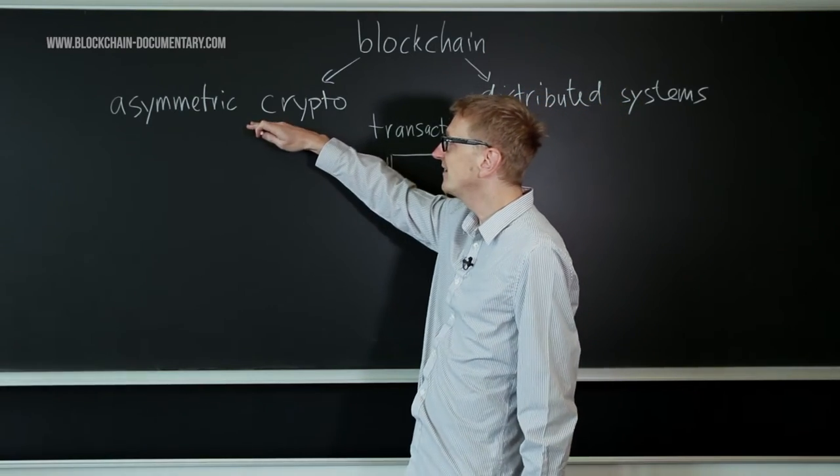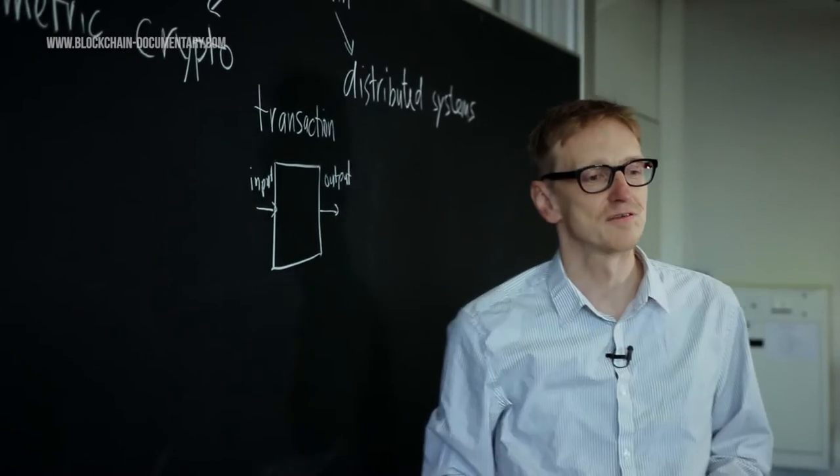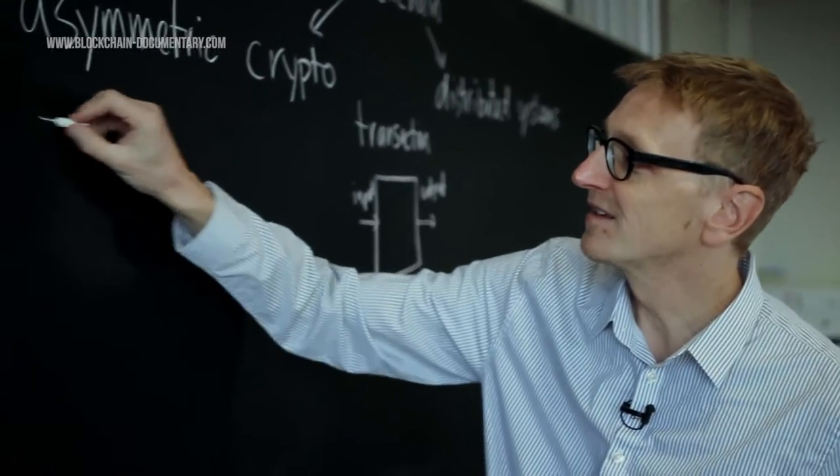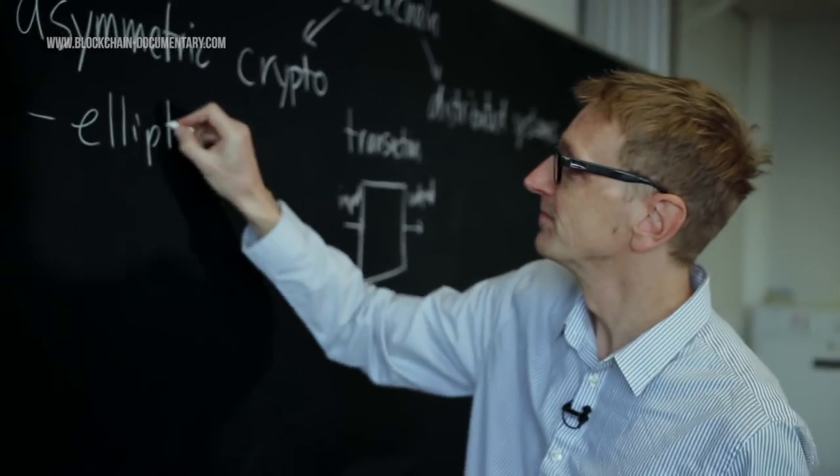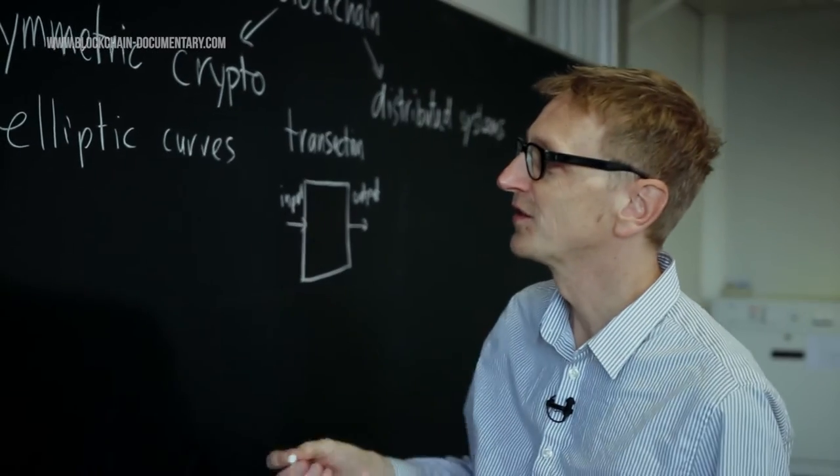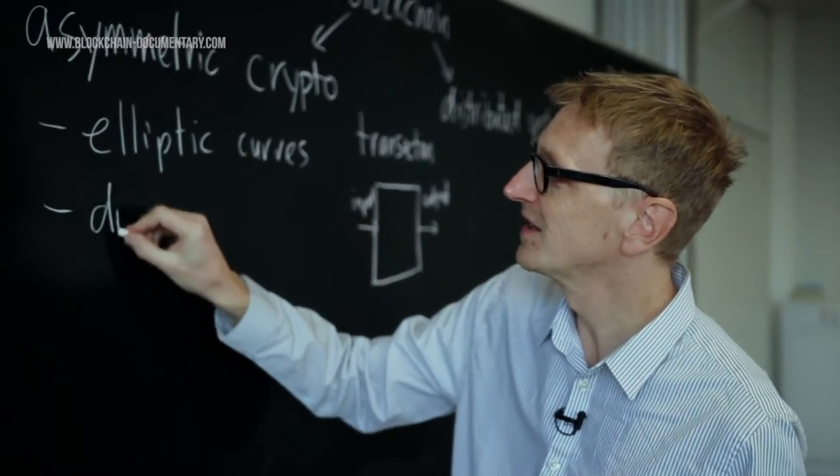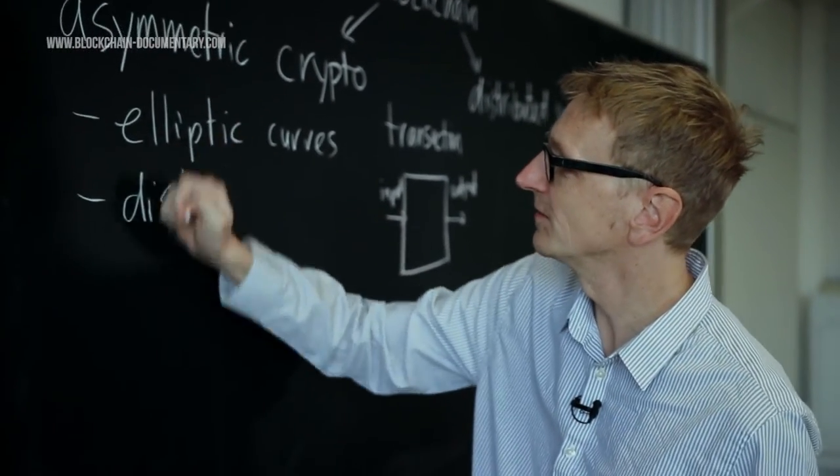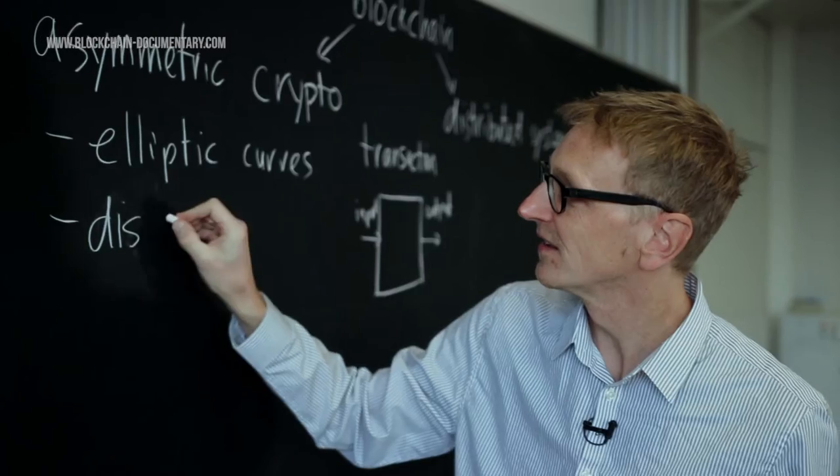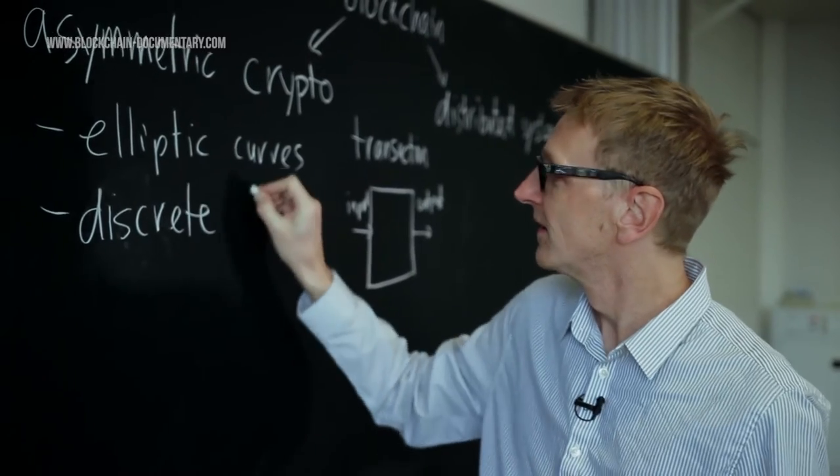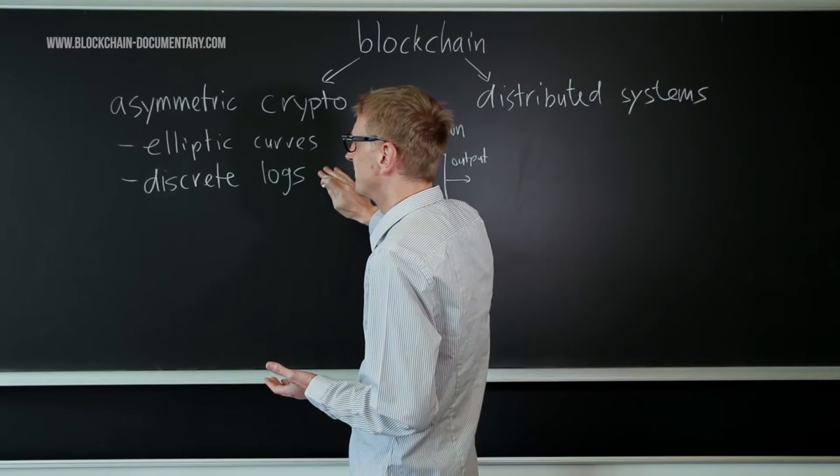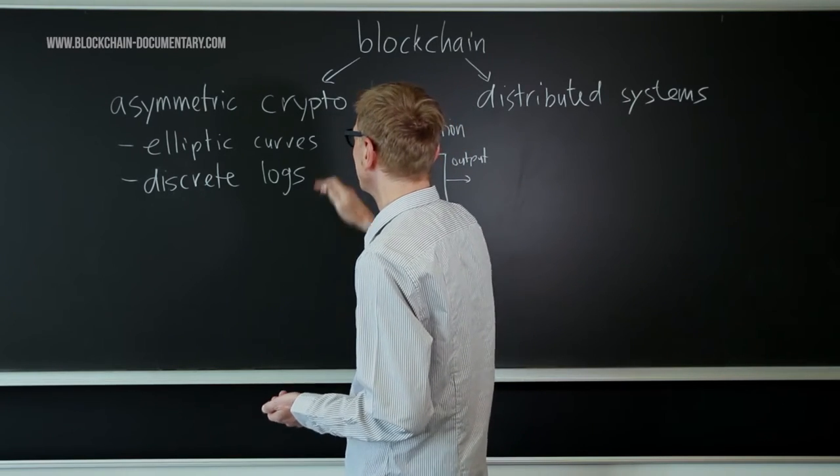So on the asymmetric cryptography, this is a really great invention from the 1970s. And what Bitcoin for instance is using is elliptic curves, or other things that are used in the internet, something like discrete logarithms. But these are a bit difficult mathematical concepts. I cannot explain them in a few seconds, basically, or a few minutes.